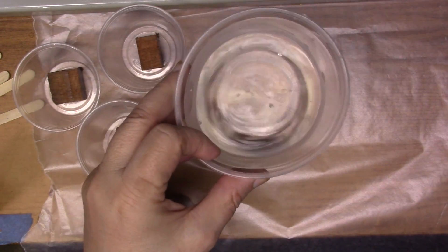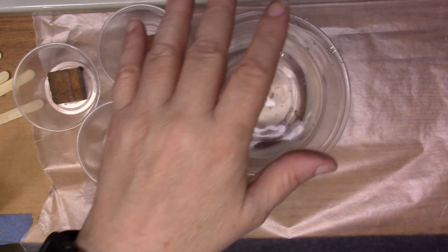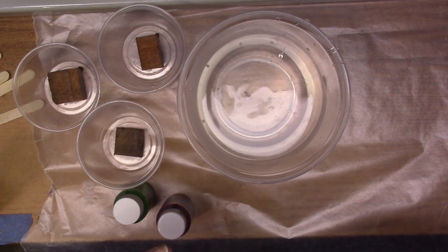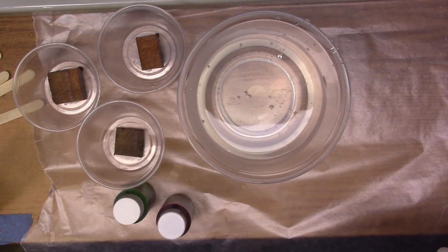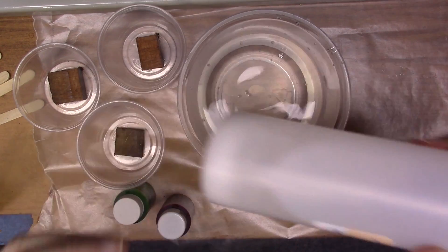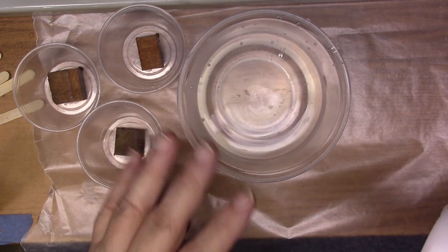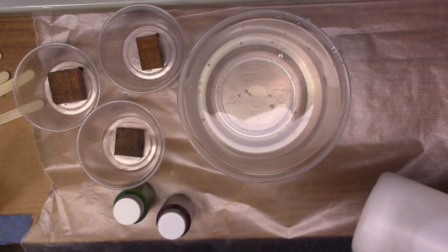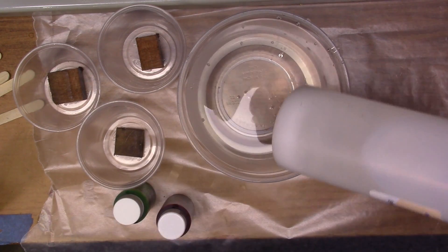So what you need is a container, or you can do this in the sink, of hot water. How hot? Just hot tap water. Don't microwave it, don't boil it. You don't want that hot because it could melt the bottle, but you want it hotter than bath water. So just run your tap on hot until it's as hot as it gets, then partially fill the container.